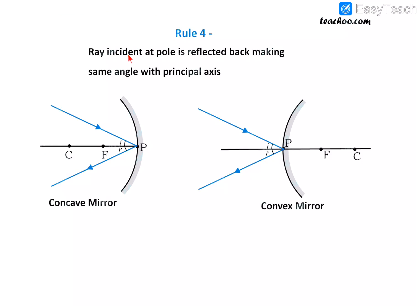The fourth and last rule: a ray incident at the pole is reflected back making the same angle with the principal axis. So the angle of incidence equals the angle of reflection, both in case of concave and convex mirrors. These rules are very important, so you need to remember them.